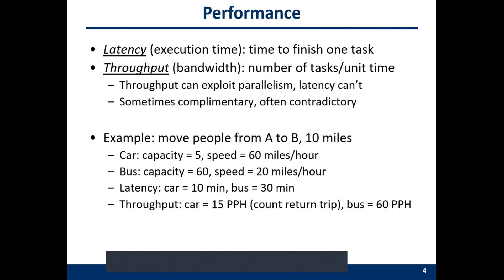Performance includes two parts. The first is latency — execution time, i.e., time to finish one task. The other is throughput (bandwidth) — the number of tasks completed per unit time. Throughput can exploit parallelism, but latency cannot. Sometimes they are complementary, but sometimes they conflict. You may achieve short latency and high throughput simultaneously, or you may have to sacrifice throughput for shorter latency, or prolong latency for larger throughput.